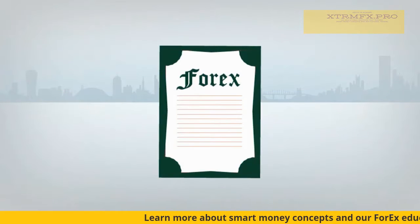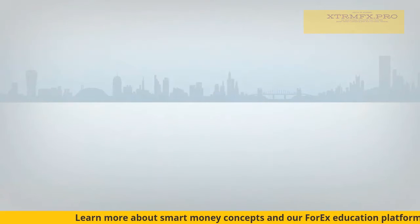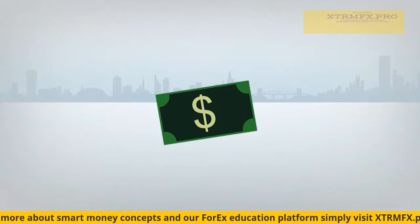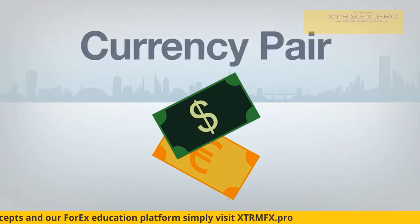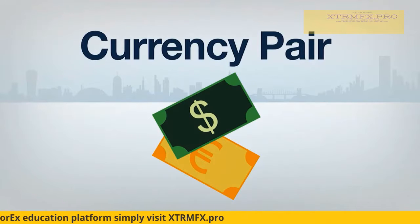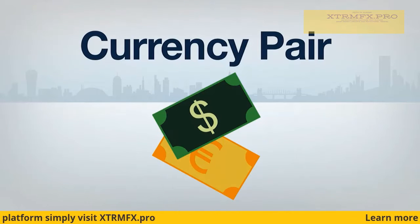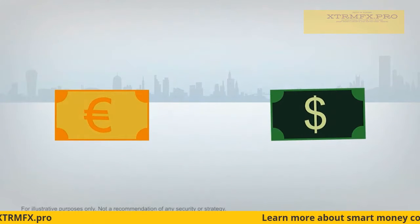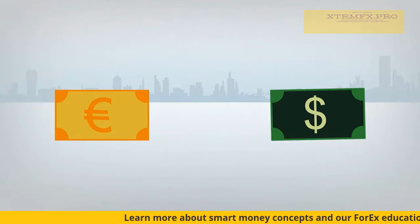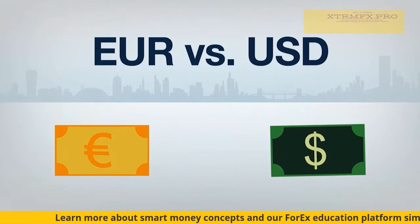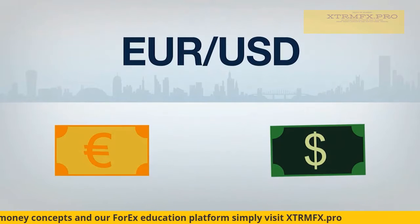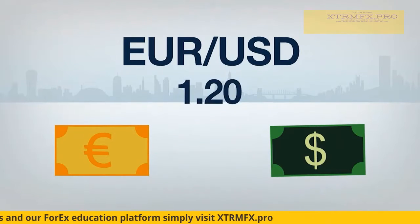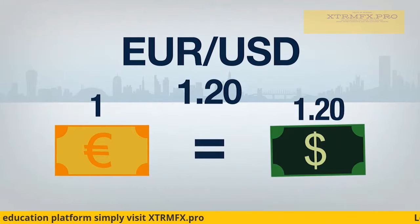Let's go over some basics of how trading forex works. When you trade forex, you're not just trading one product — you're trading two currencies against each other. This is known as a currency pair. The quote for a forex currency pair defines the value of one currency relative to the other. The easiest way to understand any quote is to read the pair from left to right. For example, if the EUR-USD is trading at 1.20, that means 1 euro is equal to $1.20 U.S. dollars.